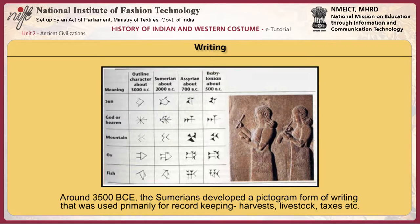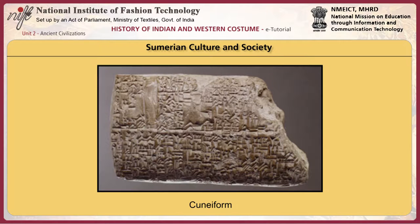Around 3500 BCE, the Sumerians developed a pictogram form of writing that was used primarily for record-keeping — harvests, livestock, taxes, etc. Over a few hundred years, it evolved into a complex cuneiform form of writing, including sentence structure and standardized grammar.